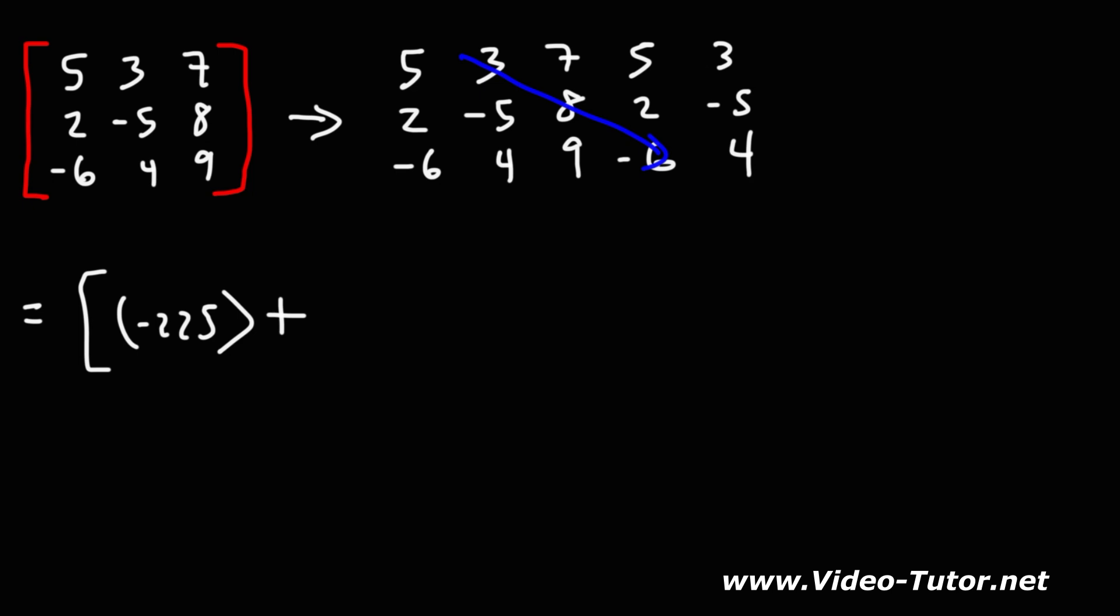Next we have 3 times 8 times negative 6. 3 times 8 is 24. 24 times 6 is 144. We do have a negative sign, so it's going to be negative 144. And then we have 7 times 2 times 4: 2 times 4 is 8, 8 times 7 is 56.